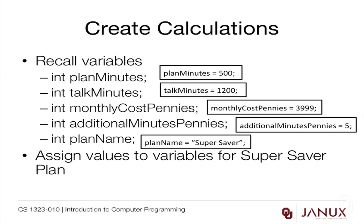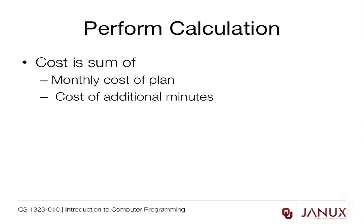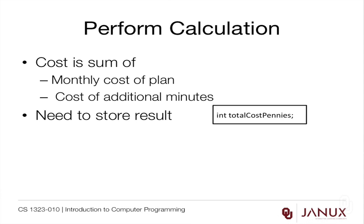Notice there's no decimal point because we decided to store it in pennies. Additional_minutes_pennies is 5, and plan_name is "super saver" — remember double quotes, not single quotes, because we have a string. So all of our variables are now assigned. When we put in the big talker plan, we'll just change the constants without changing the variable names at all. Now, we know the cost is the sum of the monthly cost and the cost of additional minutes, so we need to store a result, which means we need another variable.